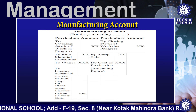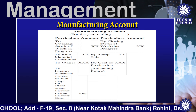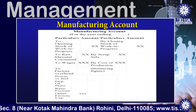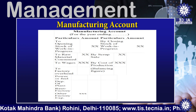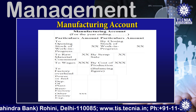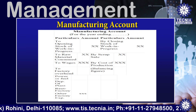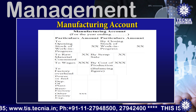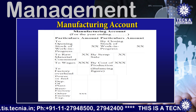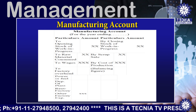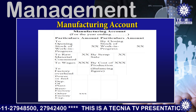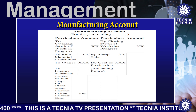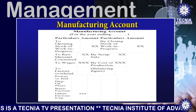depreciation of plant and other factory expenses are recorded to calculate the cost of production. Now the items that need to be recorded on the credit side or right side of the manufacturing account: by closing stock of work in progress, and by scrap value if any scrap is there. Then the cost of production is calculated as a balancing figure in the manufacturing account, and that is transferred to the trading account to calculate the gross profit earned.